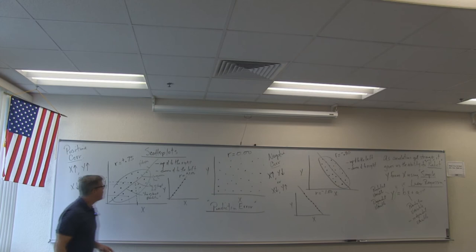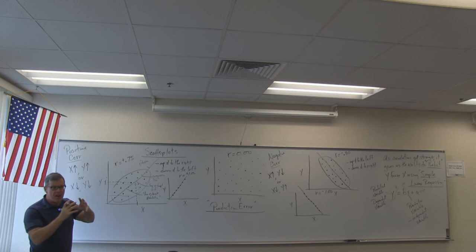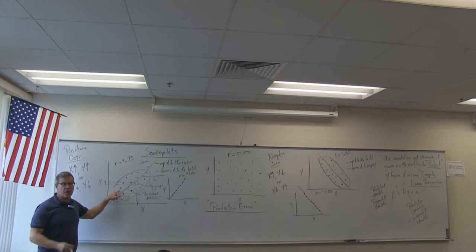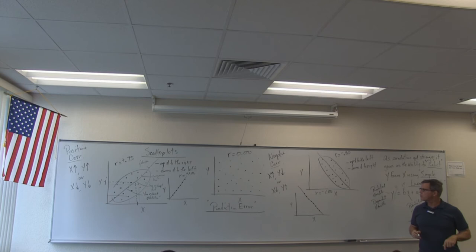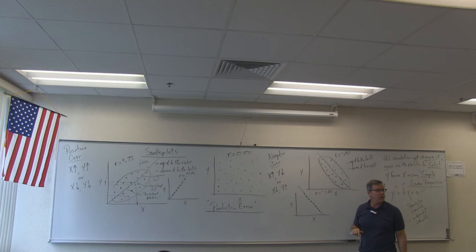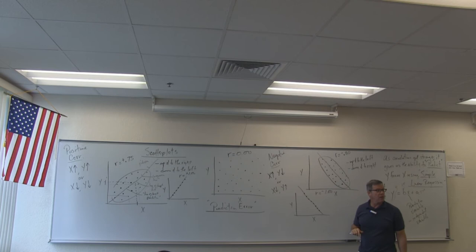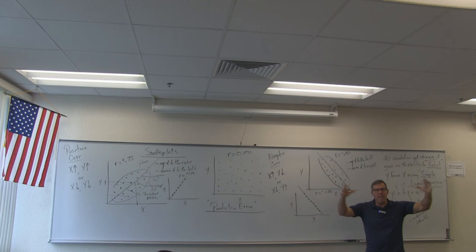Prediction error is nothing more than that bivariate dispersion. A strong correlation has some dispersion and some error; a zero correlation has a lot of dispersion and a lot of prediction error. The perfect correlation has no dispersion — zero prediction error — but in the real world, perfect correlations don't exist. Because there's so much variation, we never get perfect positive or negative correlations, so we're always predicting with some error.